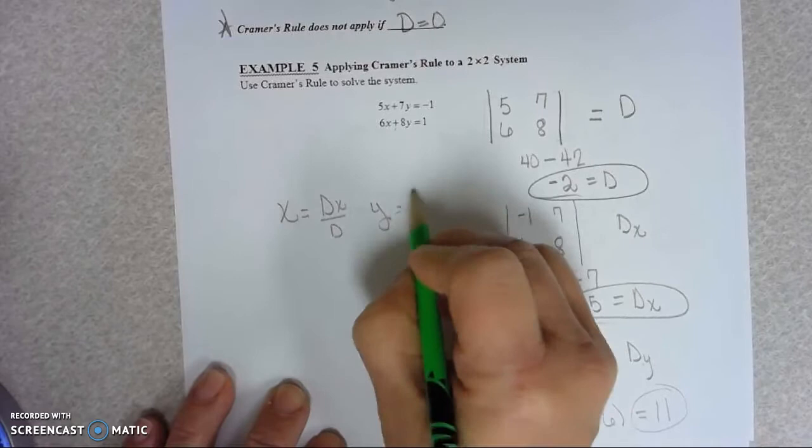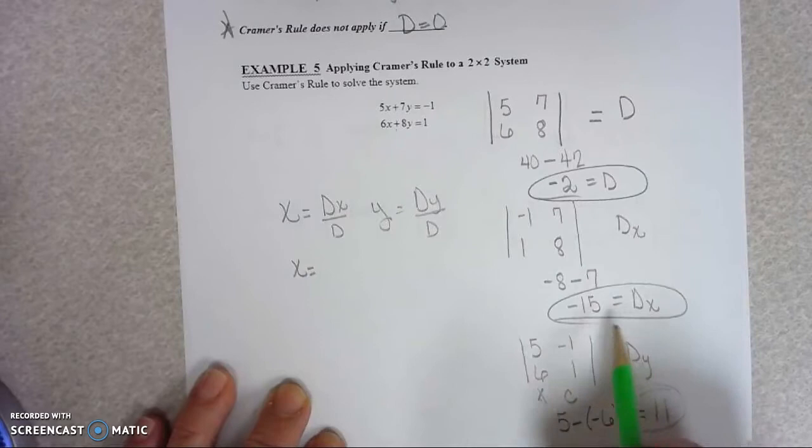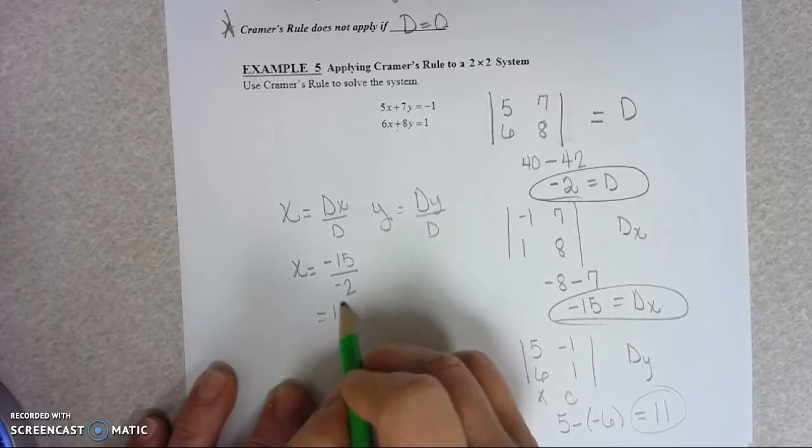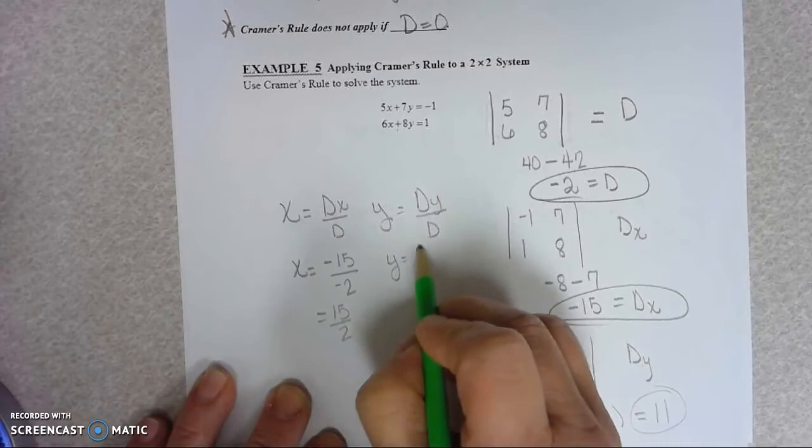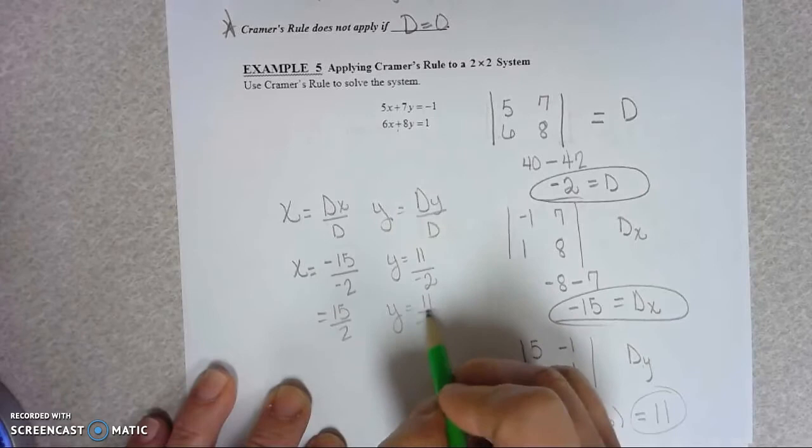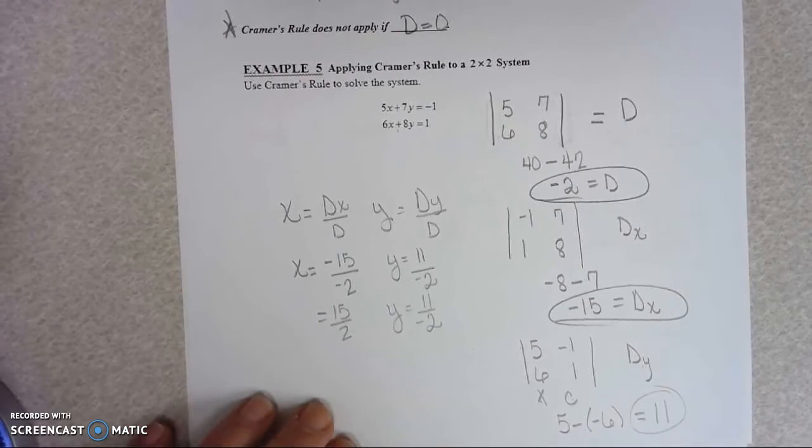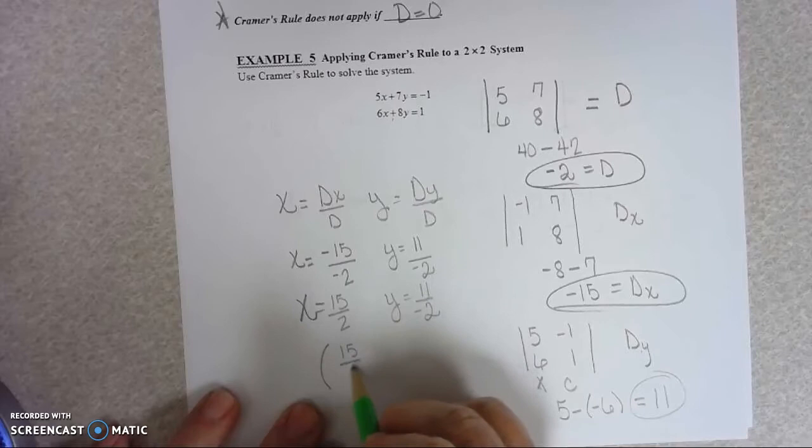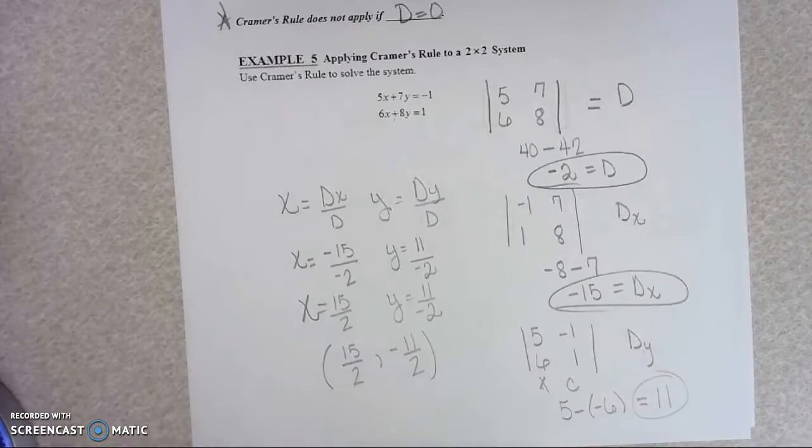Cramer's rule. To find X, we've got DX over D. To find Y is DY over D. So let's see, what is DX? Negative 15 over negative 2. And DY is 11 over negative 2. And that should be your solution. So we would write that solution as 15 halves and negative 11 halves. Those are some horrible numbers, aren't they?